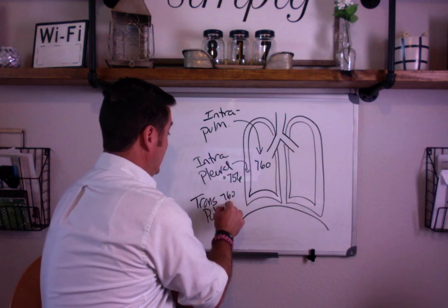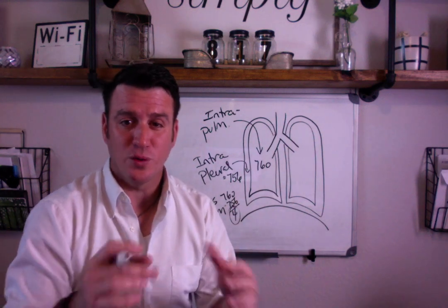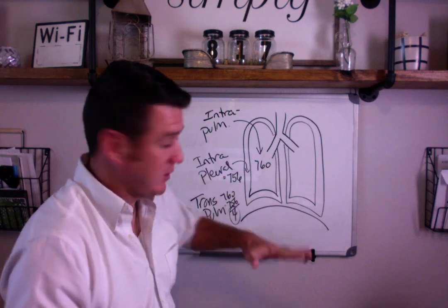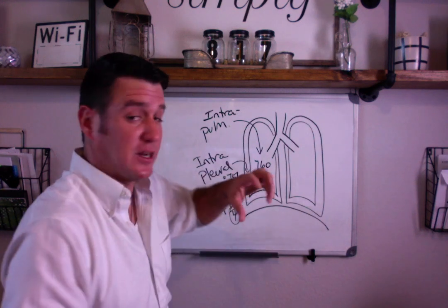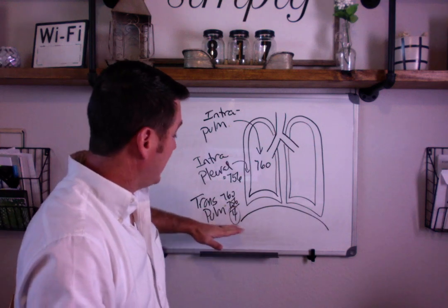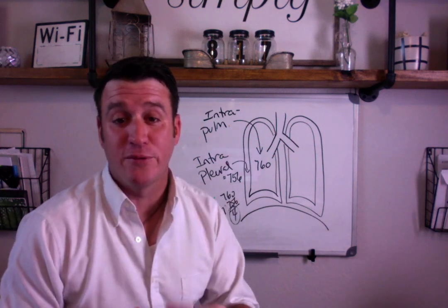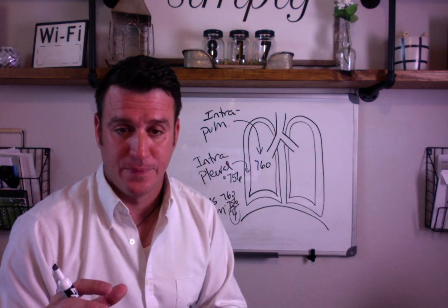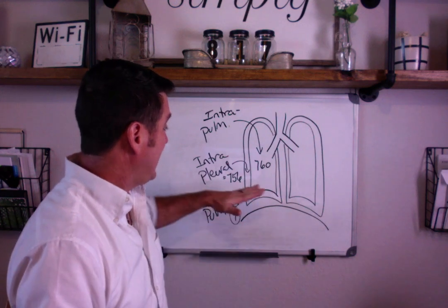It's 760 minus 756, giving you a difference of four. So intrapulmonary is inside the alveoli, intrapleural is in the pleural space, and transpulmonary is the difference when you cross those two barriers. Some people may also refer to this as transmural pressure.